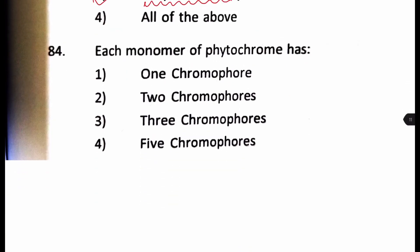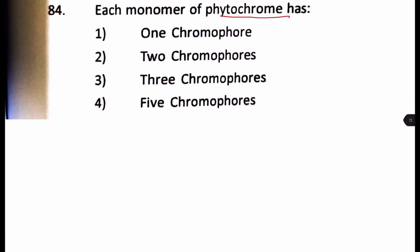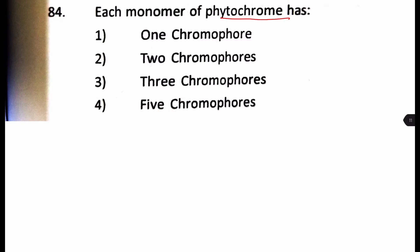Each monomer of phytochrome has. Is it one chromophore, two chromophore, three or five chromophores? Now, this is tricky because what is a phytochrome? What's the structure of a phytochrome? Actually, phytochrome is a dimer. We will draw it here. And dimer has chromophore and apoprotein part.